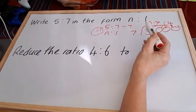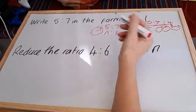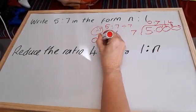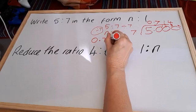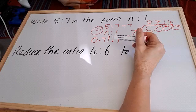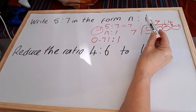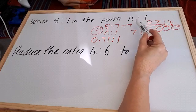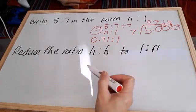So my new ratio in the form n to 1 is 0.71 to 1. We can use decimals when we're reducing down to n to 1. Let's look at the next one.